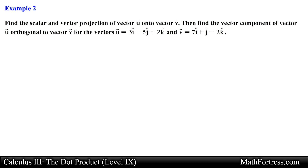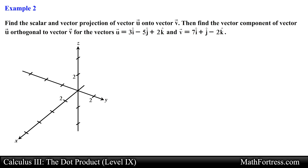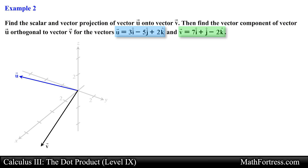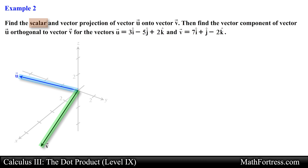Alright, let's try the next example. Find the scalar and vector projection of vector u onto vector v, then find the vector components of vector u orthogonal to vector v. In this example we are given two vectors in space. Similar to the previous example, let's find the scalar, vector, and orthogonal projections of vector u onto vector v. The process is essentially the same; we just need to be careful with the notation.